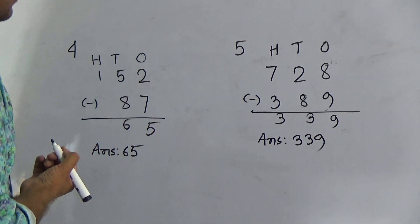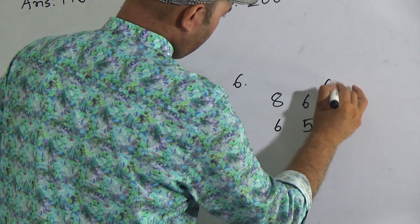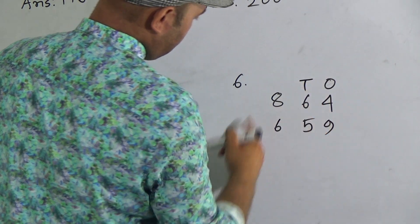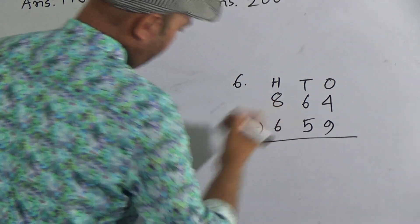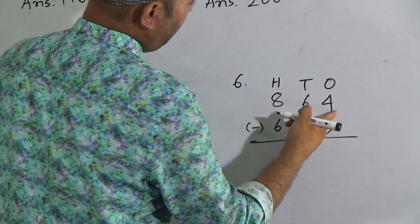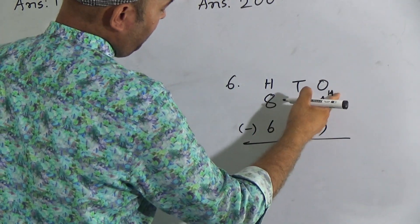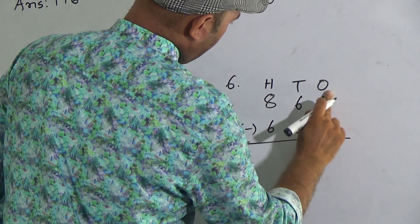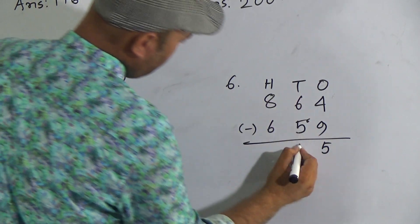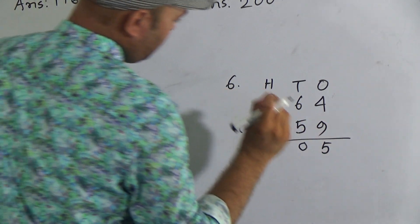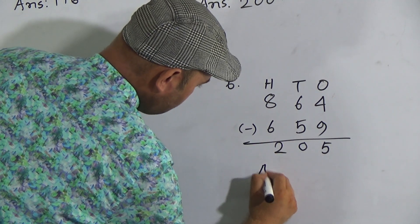Now look here, here is question number six, which is the last one. Four and nine is the ones place digit, six and five is the tens place digit, and eight and six is the hundreds place digit. Draw a line and put a minus sign. Look here — nine from four, four is smaller than nine, so we count to fourteen. Nine from fourteen it will be five, and we have carry one. One and five it will be six, six from six it will be zero — there is no carry. Now six from eight it will be two.